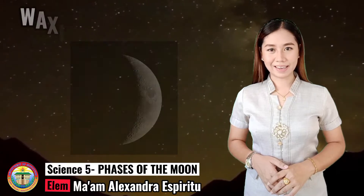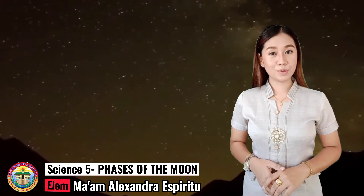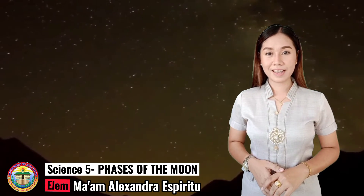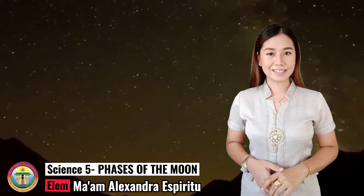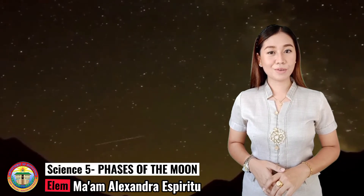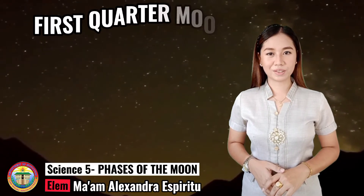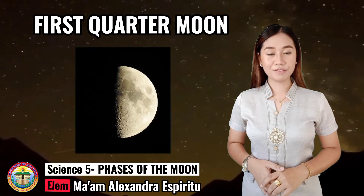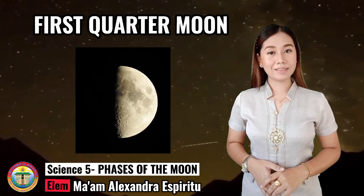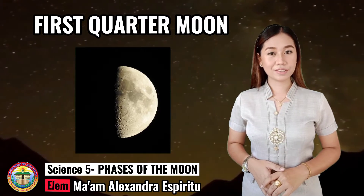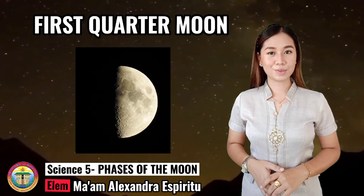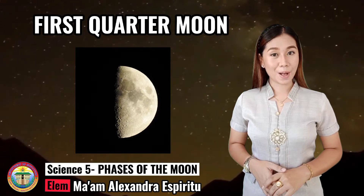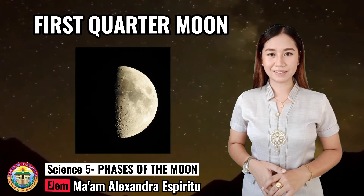When the Moon has revolved to a 90-degree angle from the Earth and the Sun, it has reached the First Quarter Moon. We can now see half of the Moon, while the other half remains in invisible shadow. One half is illuminated by the Sun.